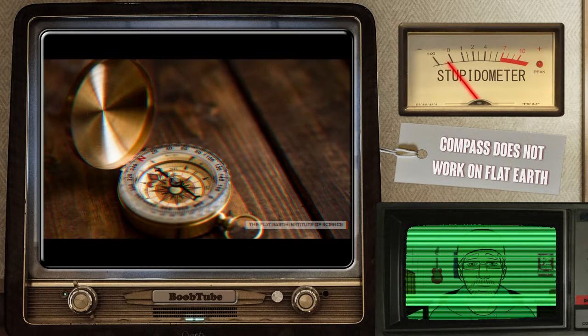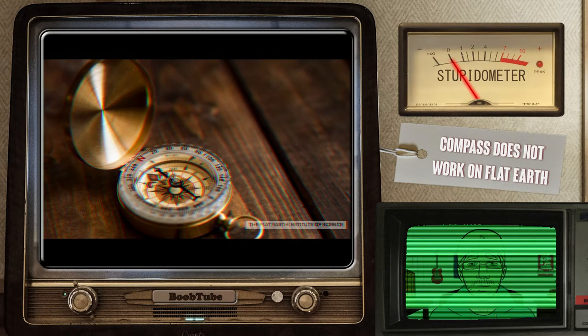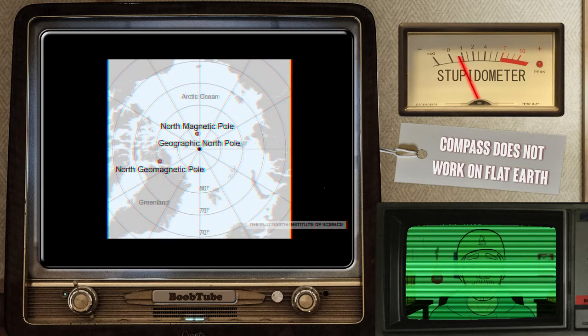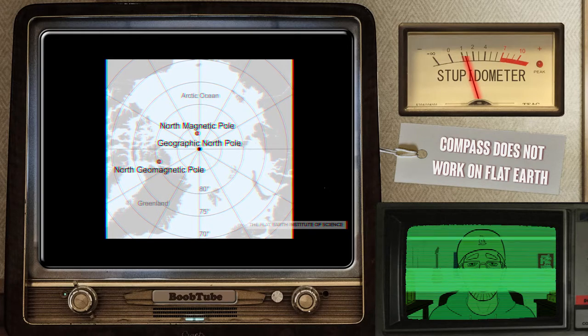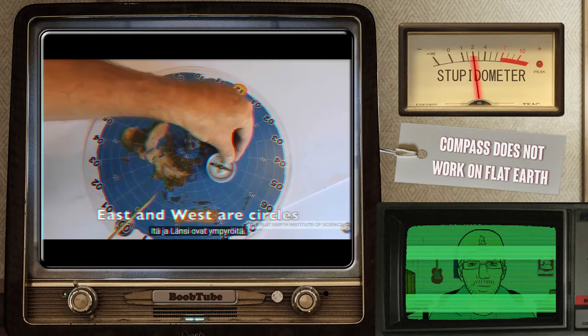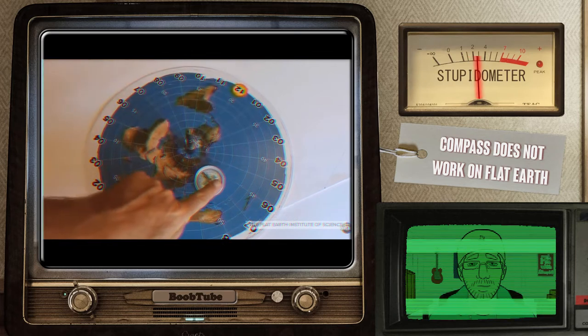Where does a compass point? North? Okay, where's north? Okay, to be exact, compasses point to the north magnetic pole, up in the arctic circle. Yeah, that makes total sense on a flat earth.